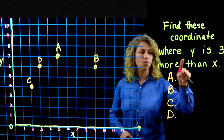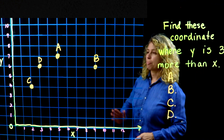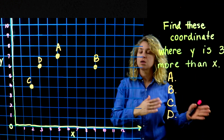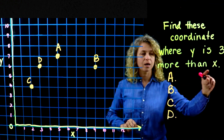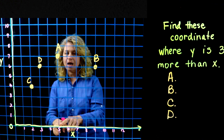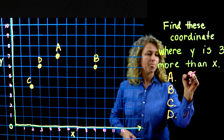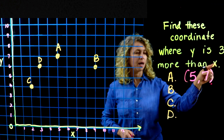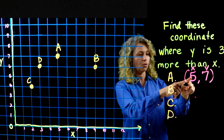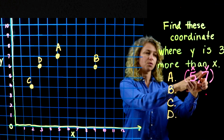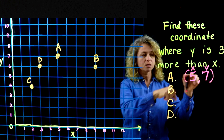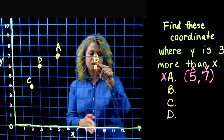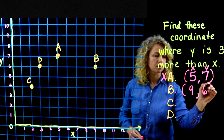This last question says: find the coordinate where Y is three more than X. When you have a problem like this, it's more abstract — you need to write it out so you can visually compare X and Y. For point A: start at the origin, it's five comma seven. Is Y three more than X? Well, seven is two more than five, so this is not our answer. For point B: over nine and up six, so nine comma six.